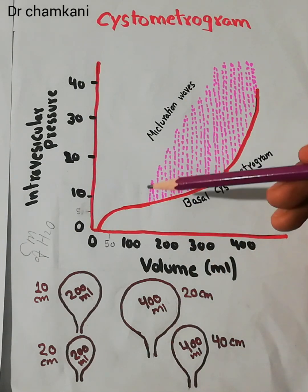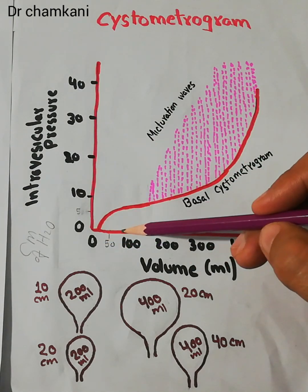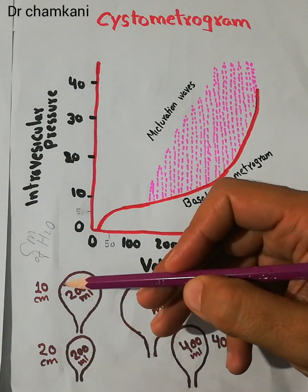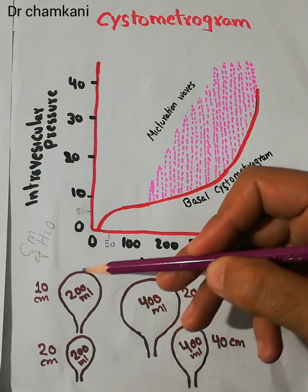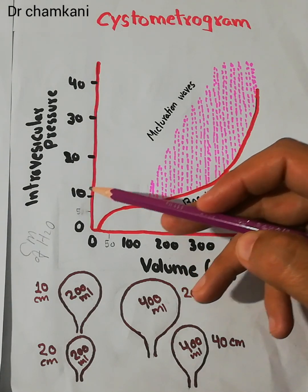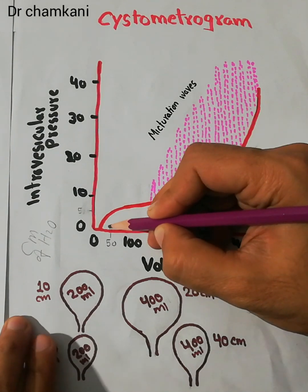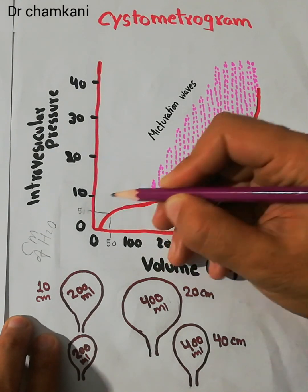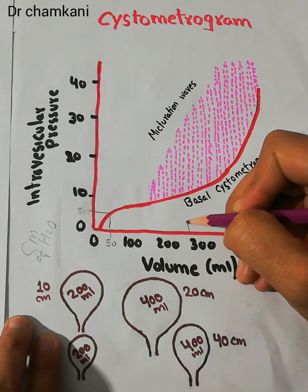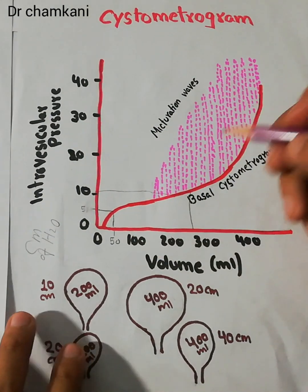We are also going to talk about the micturation waves, which is another topic. The basal tone — the basal tension or basal pressure in the wall of the urinary bladder — only rises to around 10 cm of water even at a volume of around 200 ml. At 50 ml it was just 5, and even at 200 to 250 ml the pressure has only risen to around 10 cm of water.